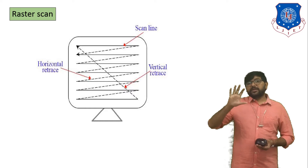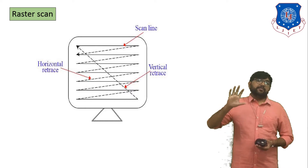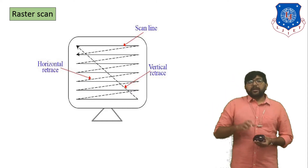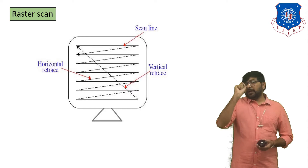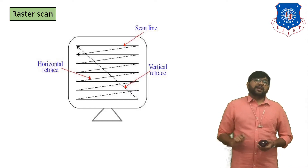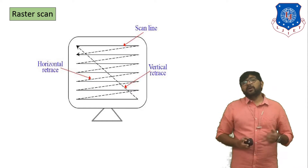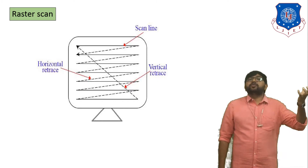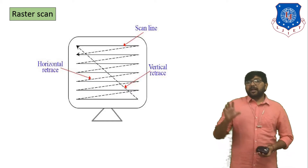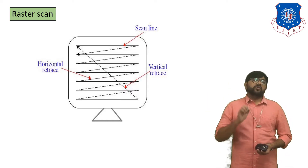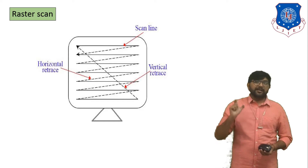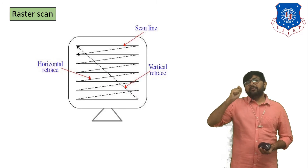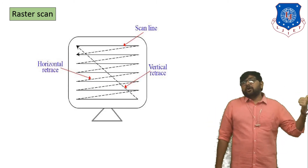Raster scan is one type of process or scanning that can picture your image on the screen of a CRT. In raster scan we use one electron beam and one frame buffer. Frame buffer is a storage device — it is an image storage device. In raster scan we define the value of pixels in two forms: either 0 or 1.